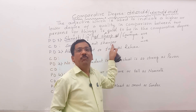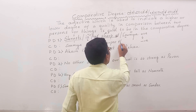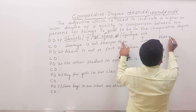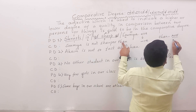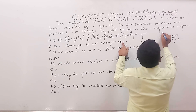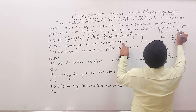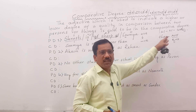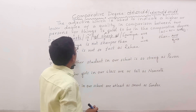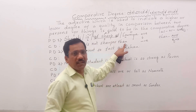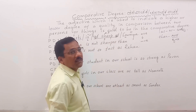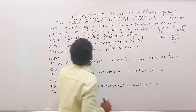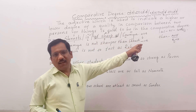After writing the adjective in comparative form, we have to write 'than' — T-H-A-N. 'Than' means 'kinta' or 'ginta', and 'as...as' means equal to. After writing 'than', you have to use the subject of the positive degree sentence, which is Srasti. So the final sentence is: Somya is not sharper than Srasti.